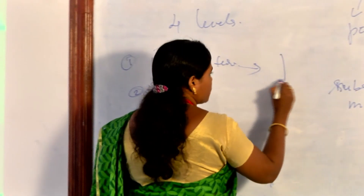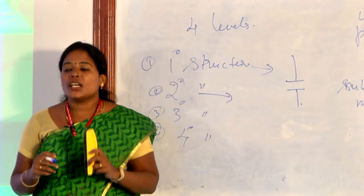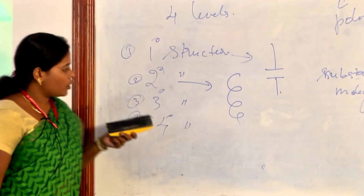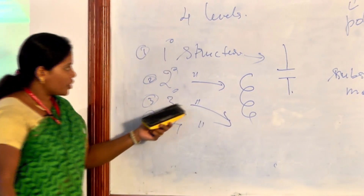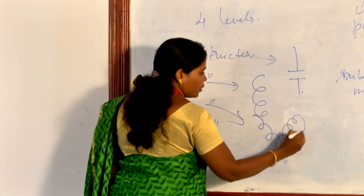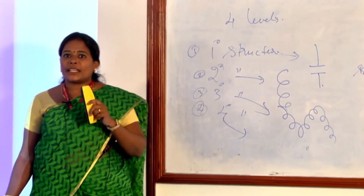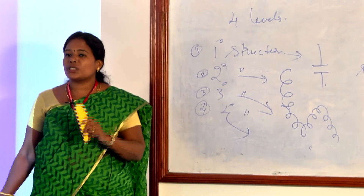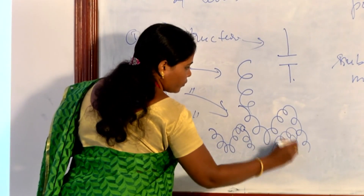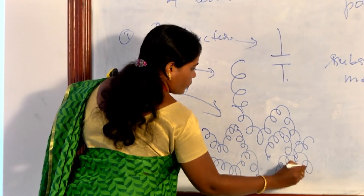The secondary structure is the spatial arrangement formed by twisting the polypeptide chain. The tertiary structure is the three-dimensional structure of the functional protein. The quaternary structure is formed when two or more polypeptide chains come together as subunits.